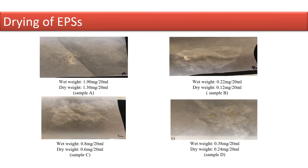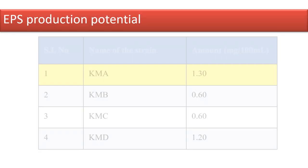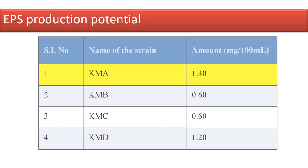Here are the images showing drying of all precipitates of the samples individually. The table shows that the maximum amount of EPS was produced in the sample named KMA, whose dry weight was 1.30 mg per 100 ml. Therefore, the KMA sample was selected for further optimization procedures.